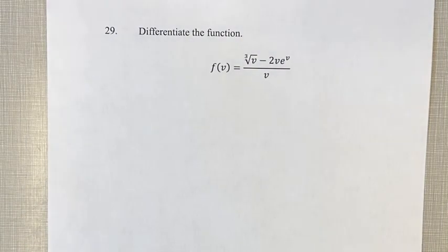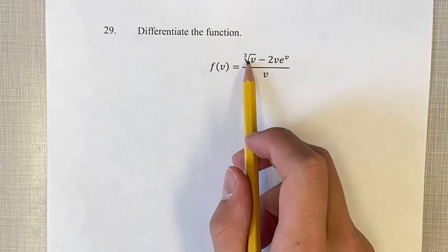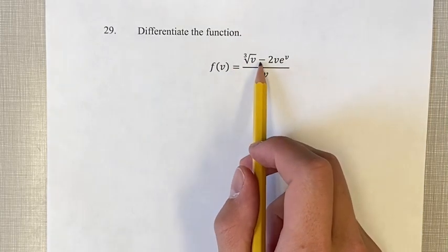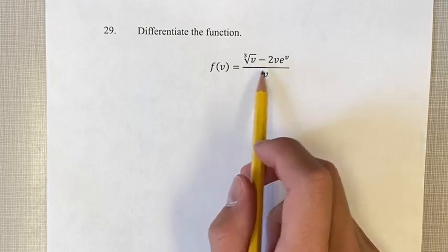Hello, and welcome back to another video. This problem is to differentiate the function f of v equals the cube root of v minus 2v times e to the v all over v.